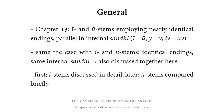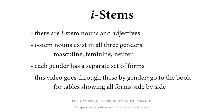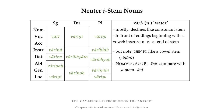We will first look at short I stems in detail, and then later we will briefly compare short U stems with them. Short I stem nouns exist in all three genders — masculine, feminine, and neuter — and each gender has a separate set of forms. This video will go through these forms by gender, but if you want a table showing all forms side by side, you can go to Chapter 26 in the book. Neuter I stem nouns are the most straightforward, and that's why we're looking at them first.